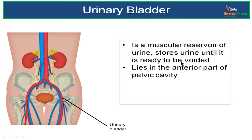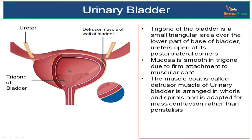What is the location of urinary bladder? You can see in this picture the pelvic cavity — the urinary bladder is located in the anterior part of the pelvic cavity. This is a section of the bladder showing the muscle layer and also the interior of the bladder, the trigone of the bladder. You can see that the ureters are opening in the posterolateral corners.